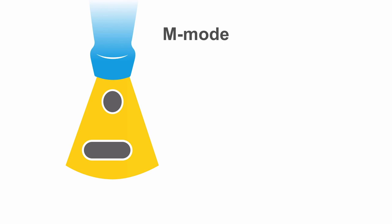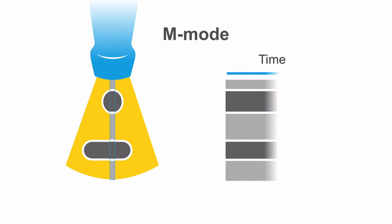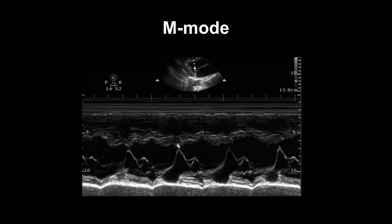M-mode, or motion mode, measures motion of particular structures over time. A gate is placed on the ultrasound image, and then M-mode demonstrates any motion along the structures of that gate. M-mode is often used for cardiac measurements and determining fetal heart rate. Here you can see an example of M-mode, showing the motion of a mitral valve in the heart.